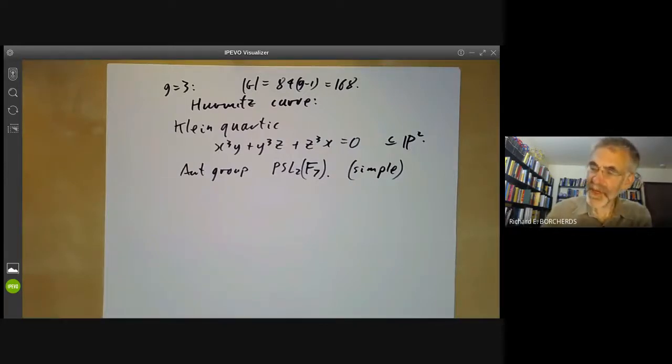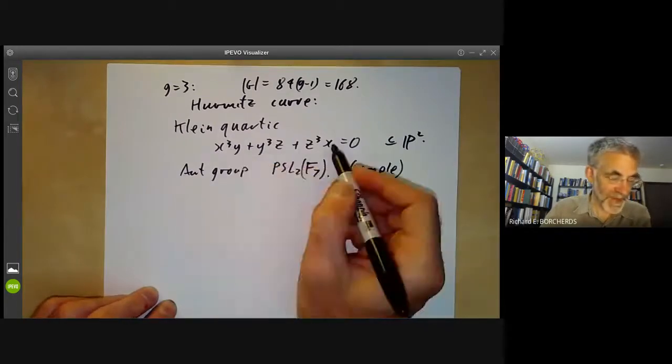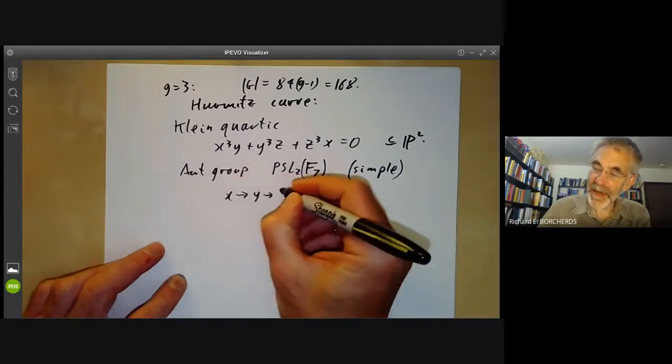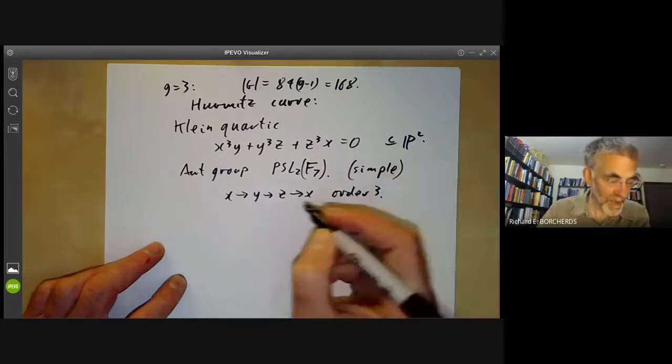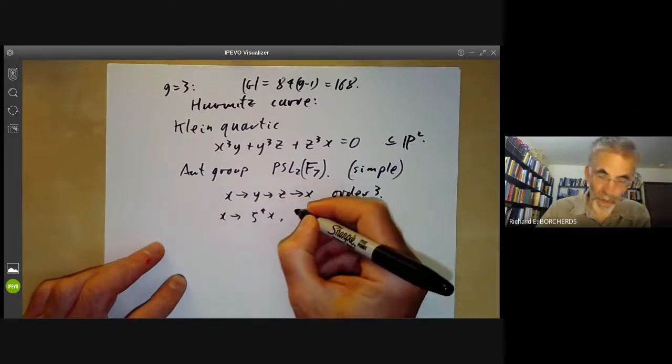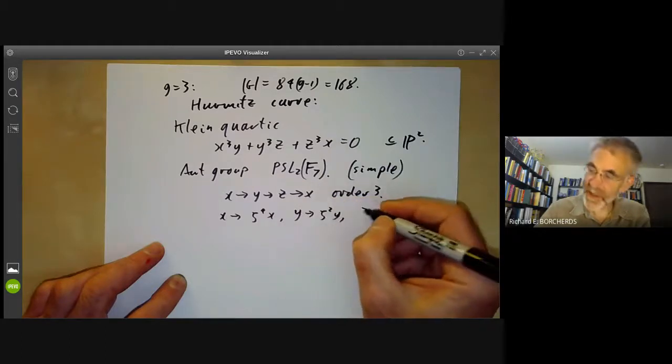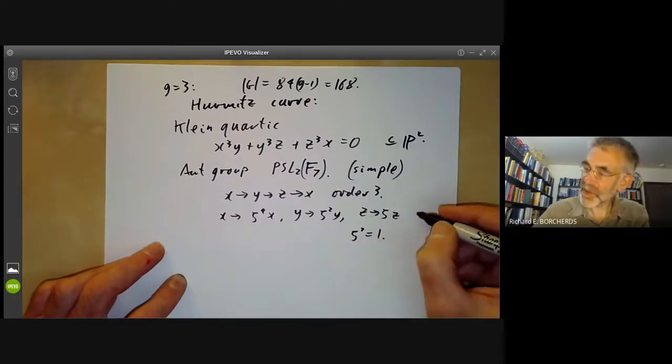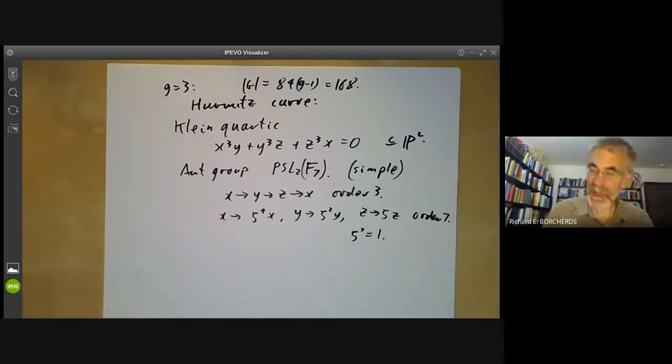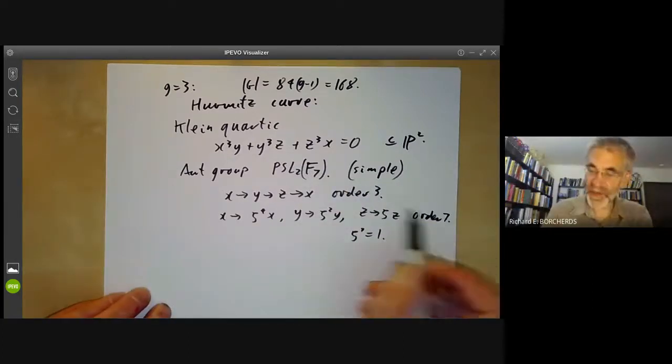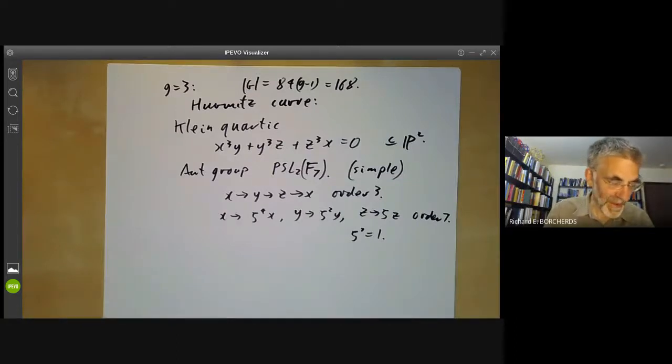It's not terribly easy to see that this is the full group of automorphisms. There are some obvious automorphisms: we can map x to y to z to x, so this obviously gives you an automorphism of order three. We can also map x to zeta to the four x, y to zeta squared y, and z to zeta z, where zeta to the seven is a seventh root of one, and this obviously is order seven. And there seems to be no particularly easy way to find a third automorphism. So these elements of orders three and seven generate a subgroup of order 21, and finding a further automorphism is rather tricky. So as I'm feeling lazy, I'm not going to do it.